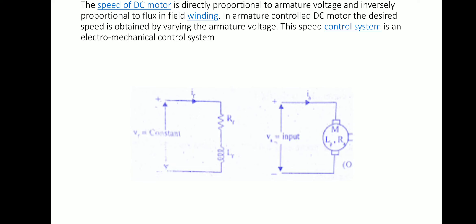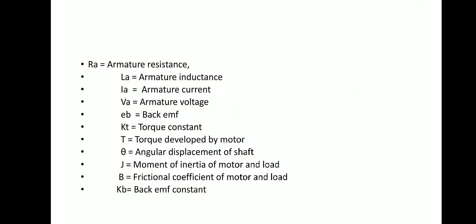The speed control system is an electromechanical control system shown by this circuit diagram. Let Ra be the armature resistance, La be the armature inductance, Ia be the armature current, Va the armature voltage, Eb the back EMF, KT the torque constant, T the torque developed by the motor, θ the angular displacement of the shaft, J the moment of inertia of motor and load, B the frictional coefficient of motor and load, and KB the back EMF constant.